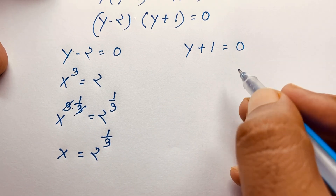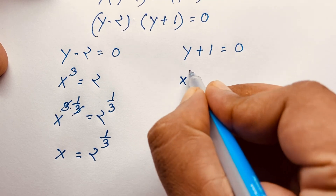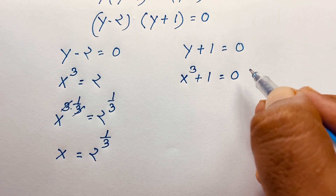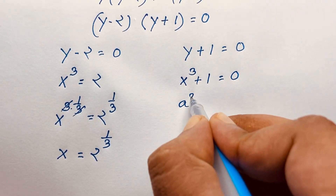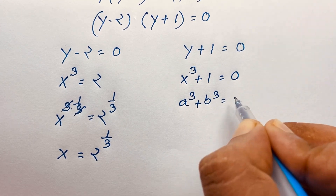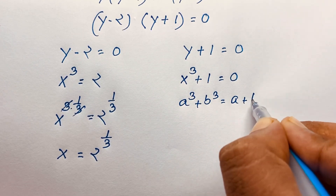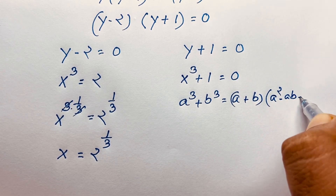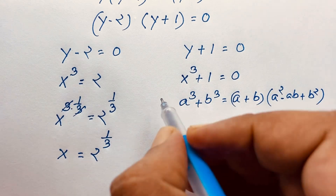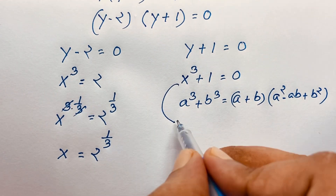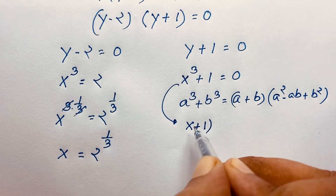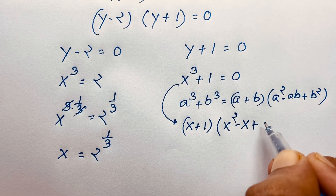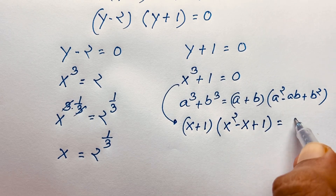But for y plus 1 is equal to 0: y, which is x to the power 3, plus 1 is equal to 0. Now recall the sum of cubes formula: a cubed plus b cubed equals a plus b times a squared minus ab plus b squared. If I apply this formula here, this expression becomes x plus 1 times x squared minus 1 times x, which is x, plus b squared — meaning 1 squared — is equal to 0.